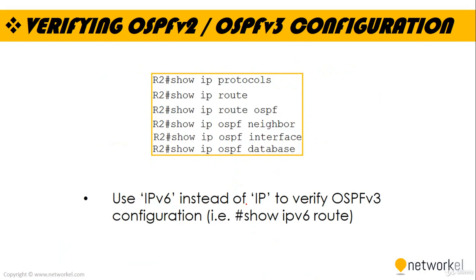To verify OSPFv2 and OSPFv3 configuration, we can use the commands: 'show ip protocols', 'show ip route', 'show ip route ospf', 'show ip ospf neighbor', 'show ip ospf interface', and 'show ip ospf database'. For OSPFv3, use 'ipv6' instead of 'ip' — for example, 'show ipv6 route' instead of 'show ip route'.